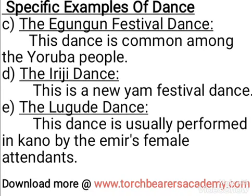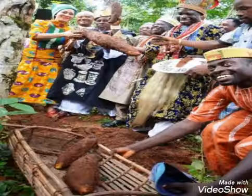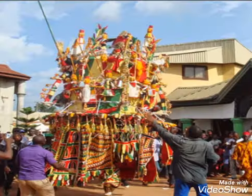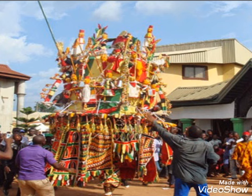The next one is the Iruji dance. This is a new yam festival dance. For the Igbos and the Yorubas, every tribe has their own festival. This festival happens when the yam comes out, and they celebrate the productivity and the fruitfulness of their land. Without this festival, you cannot eat yam.